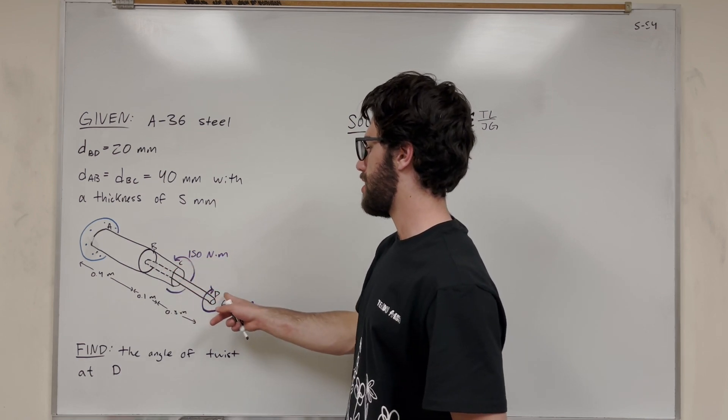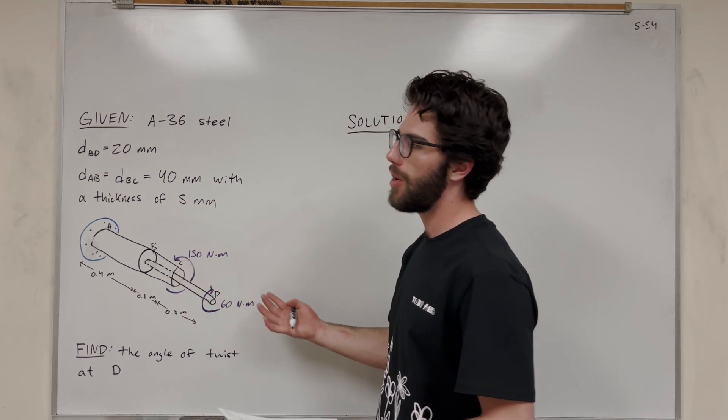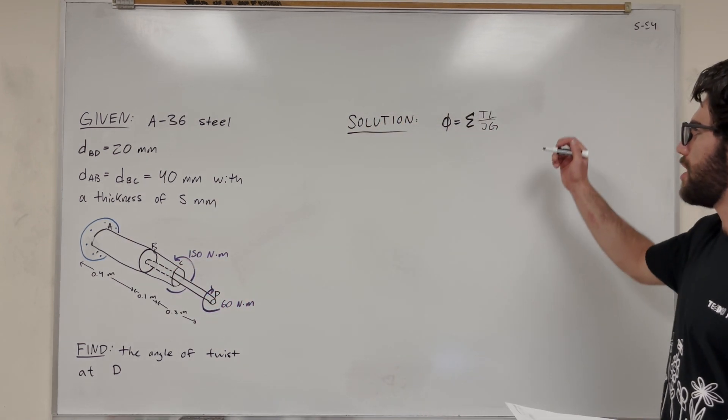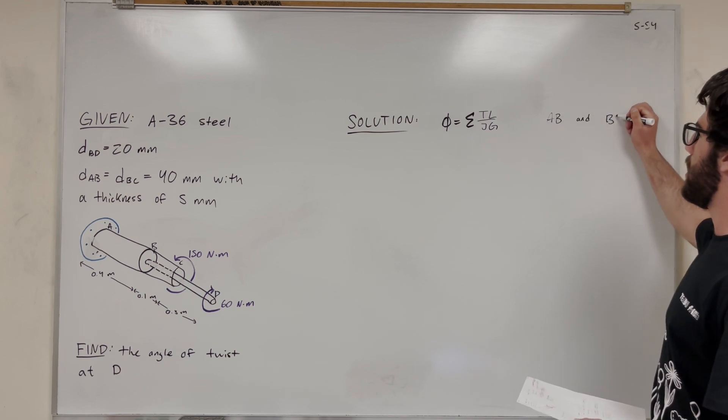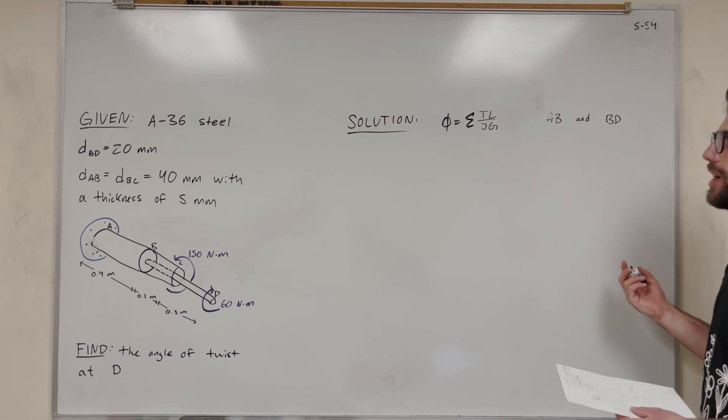But this thin rod from B to D, that gets twisted. That's going to be part of the twist of D. So this is going to be for AB and BD. Those are the two ones we're going to add together.